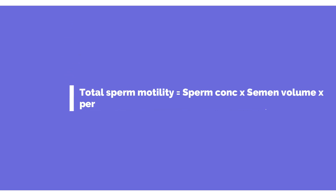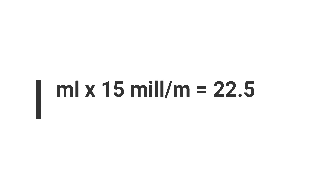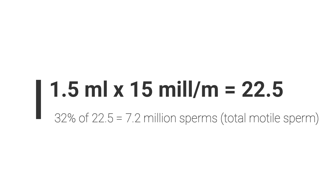I've put up a simple calculation. Total sperm motility is calculated by multiplying the sperm concentration by the semen volume by the percentage of progressively motile sperm. For example, if a man has 1.5 ml semen volume and 15 million per ml sperm concentration — 1.5 × 15 is roughly 22.5 million — multiplied by 32% gives 7.2 million progressively motile sperm. That's how total sperm motility is calculated.